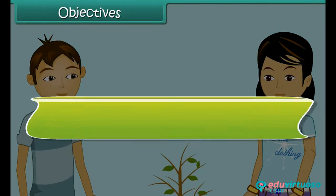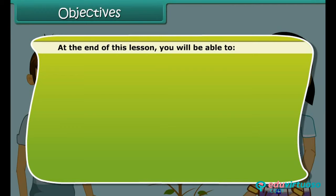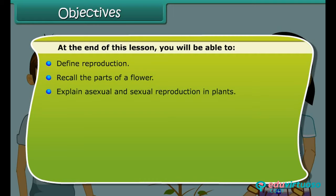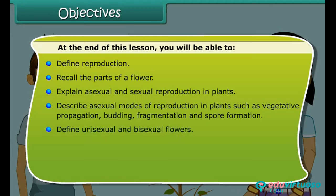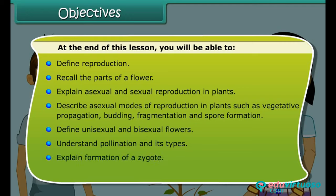Objectives. At the end of this lesson, you will be able to: define reproduction; recall the parts of a flower; explain asexual and sexual reproduction in plants; describe asexual modes of reproduction in plants such as vegetative propagation, budding, fragmentation and spore formation; define unisexual and bisexual flowers; understand pollination and its types; explain formation of a zygote; discuss seed dispersal in plants.